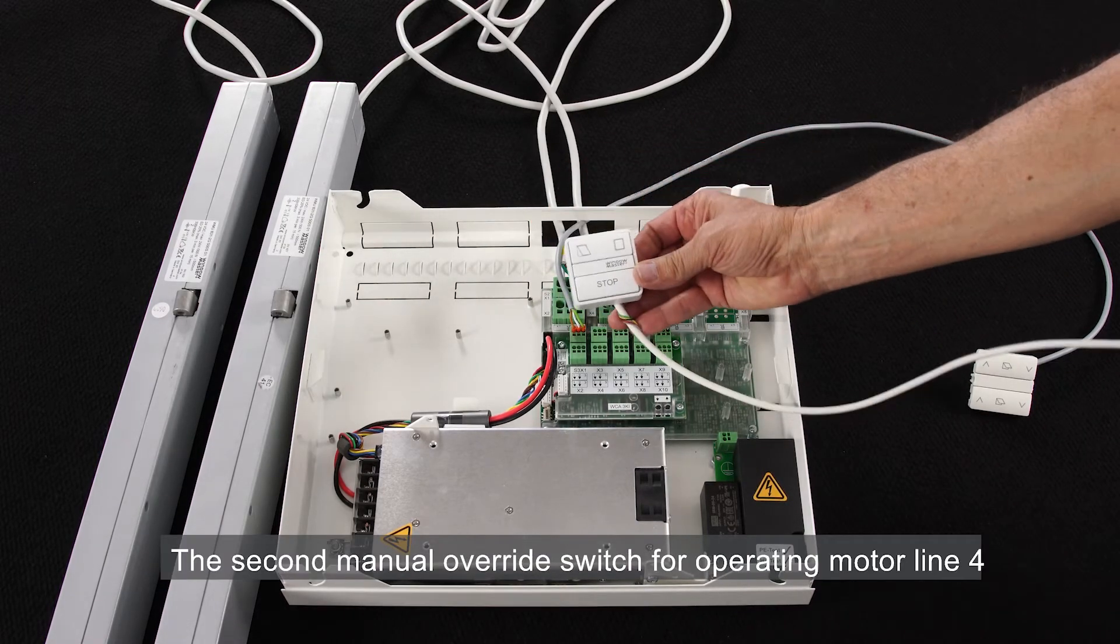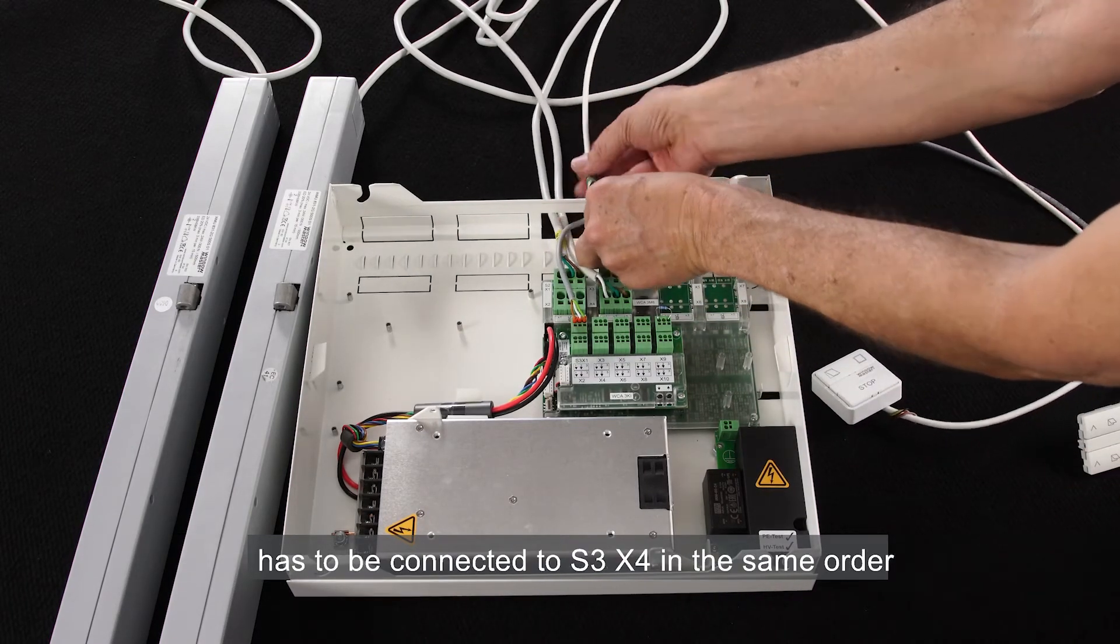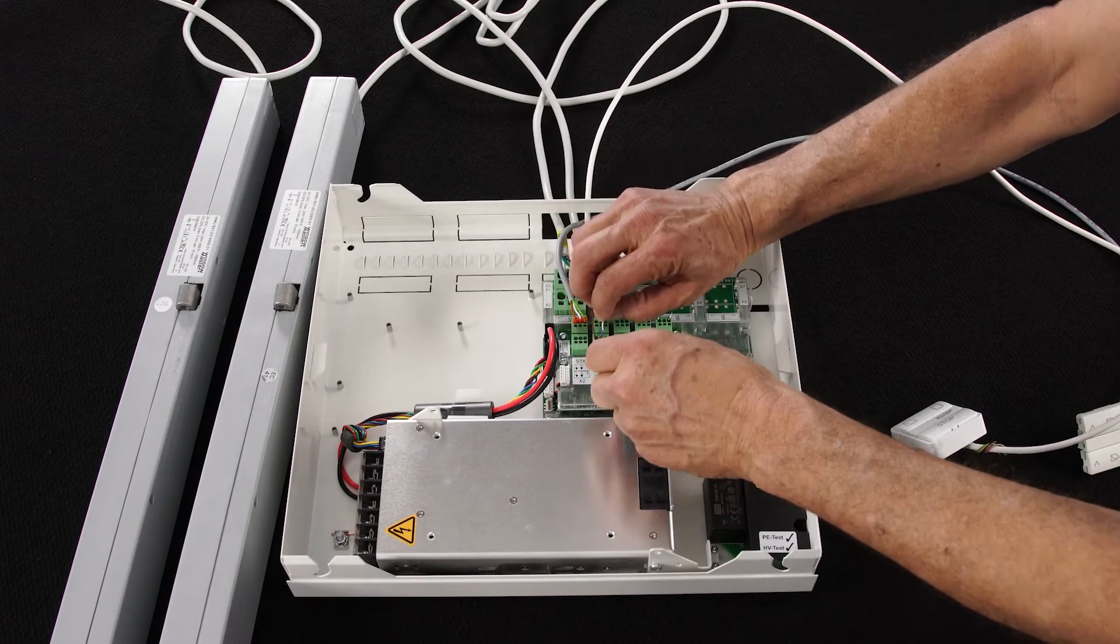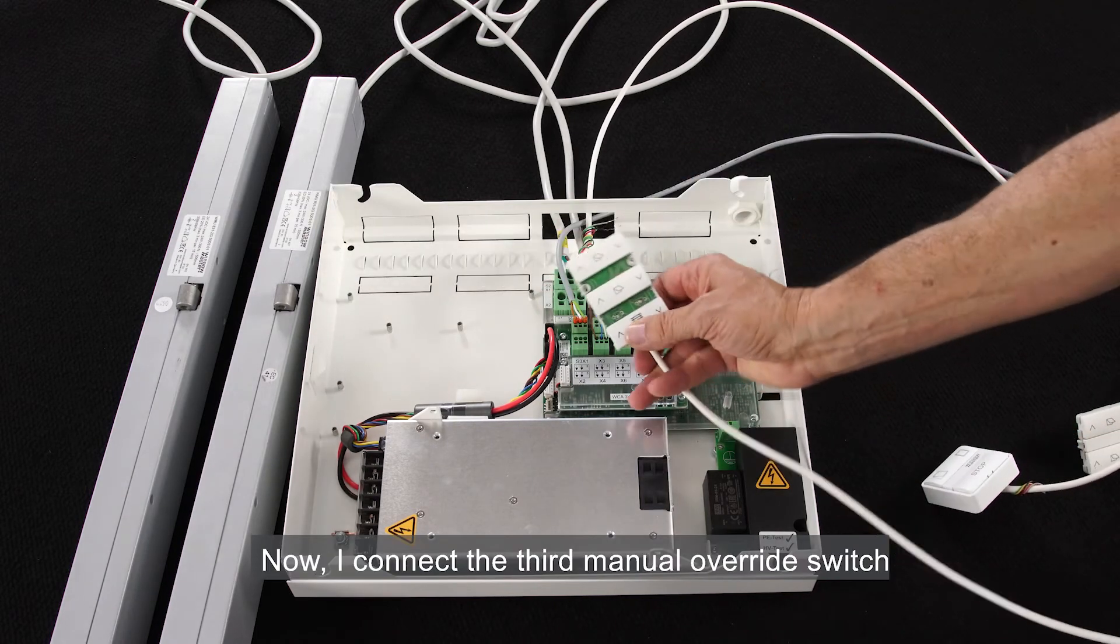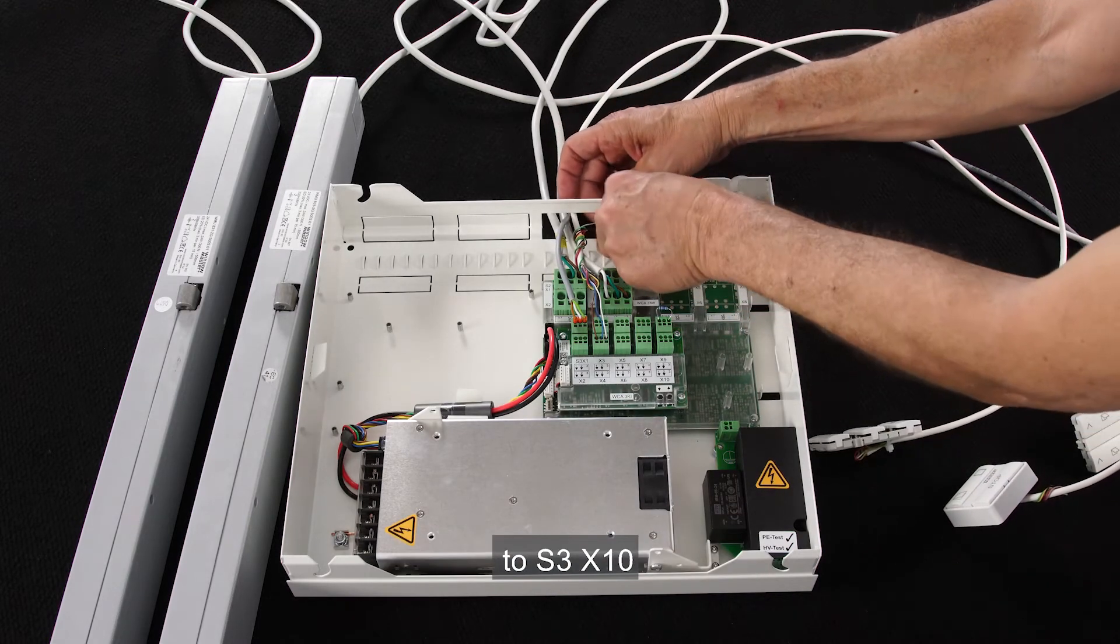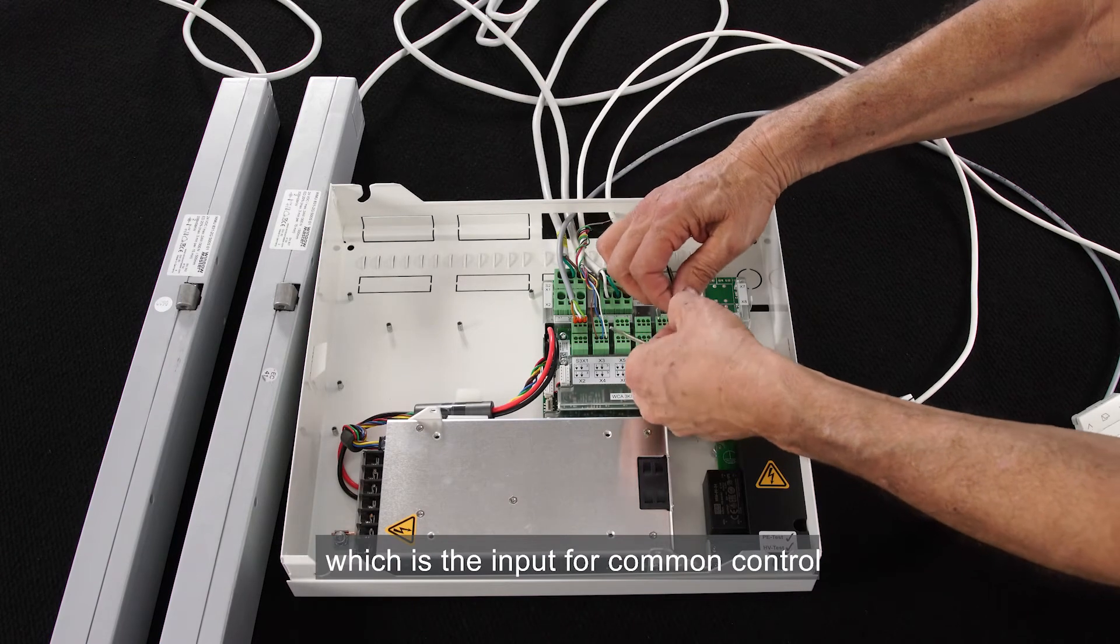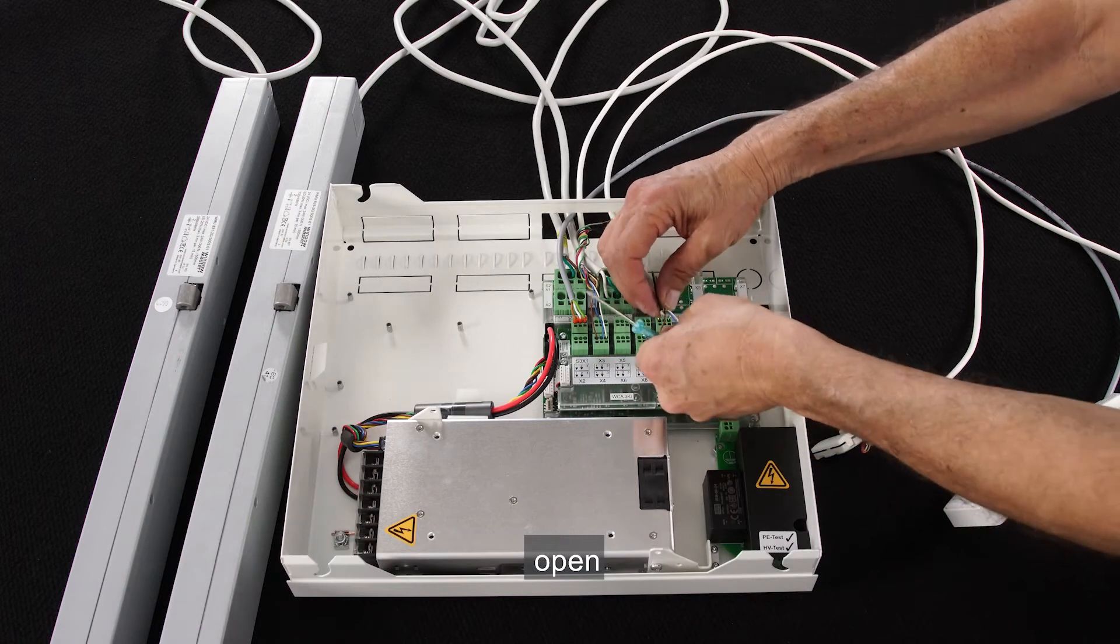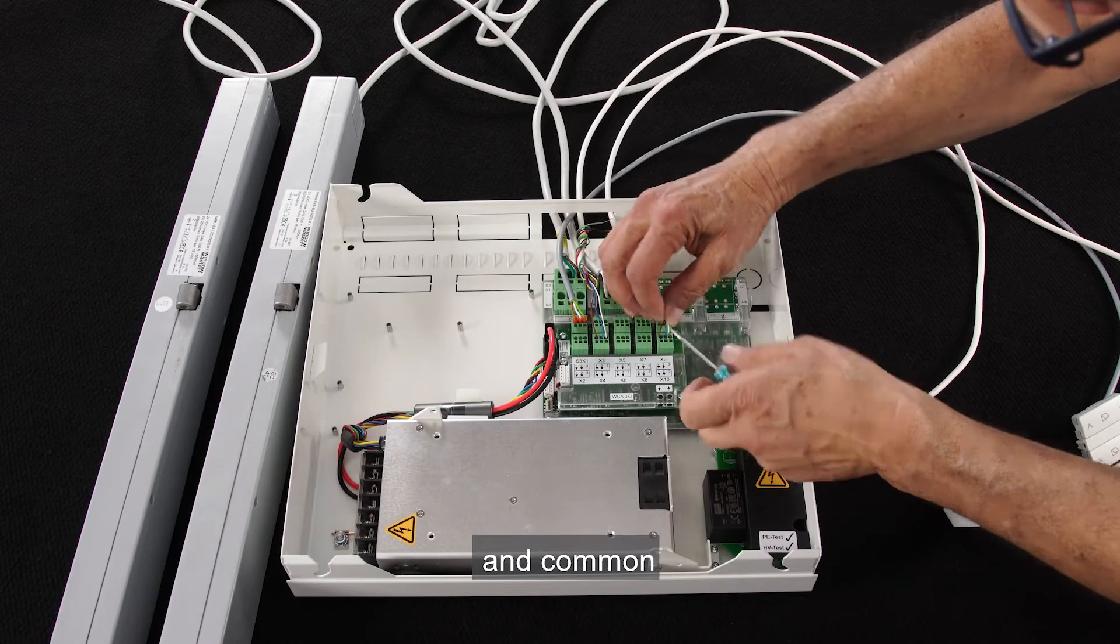The second manual override switch for operating motor line 4 has to be connected to S3X4 in the same order. The open signal, the closed signal, and the common. Now I connect the third manual override switch representing the thermostat to S3X10, which is the input for common control. The cable cores are connected in the same order: open, close, and common.